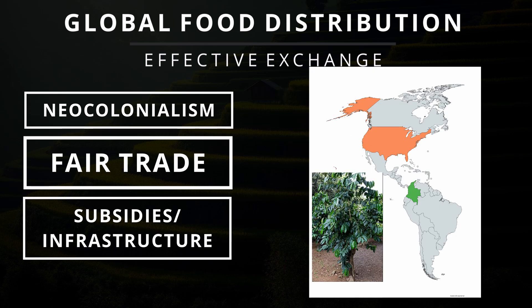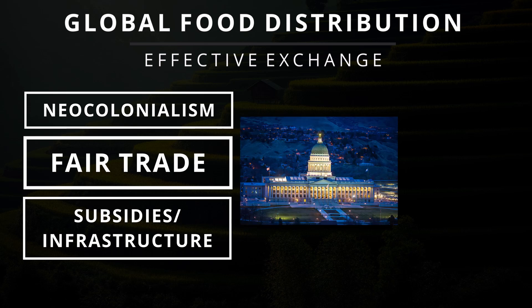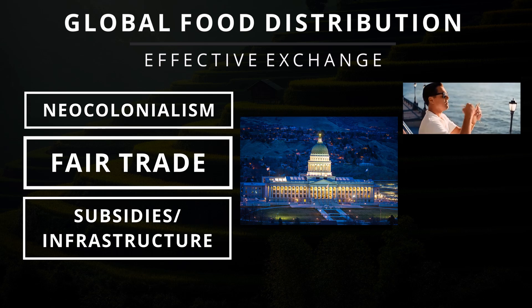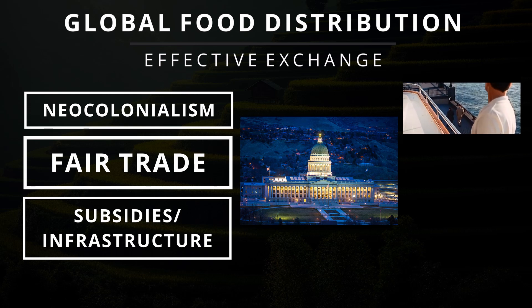Then we have fair trade — think of this as a contract between underdeveloped countries and the developed countries, so that the farmers in the underdeveloped countries have a chance at competing with the big boys. The farmers are also guaranteed certain prices, so that it ensures the farmers in those countries are not being taken advantage of. Lastly, we have subsidies and infrastructure, which are both things taken care of by the government. Think of subsidies as fund coupons that the government gives to the farmers, so that it guarantees certain prices, which incentivizes farmers to produce and to maintain a level of supply.